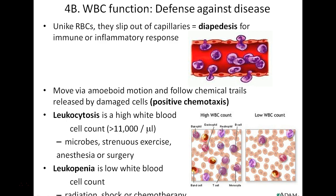The body tries to keep a homeostatic balance of white blood cells. Leukocytosis — a higher white blood cell count — suggests the presence of physical damage, microbial invasion, surgery, anesthesia, recent infection, or stress. On the other end, leukopenia — a low white blood cell count — puts a person at risk of developing an infection or decreases their ability to fight an infection effectively.